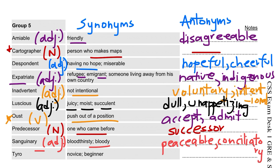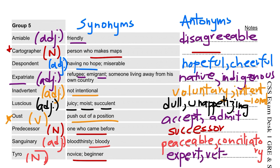And the last word for today is tyro. This is a noun and it means novice or beginner. Its antonyms are expert or veteran. Okay, take care, good luck, thank you.